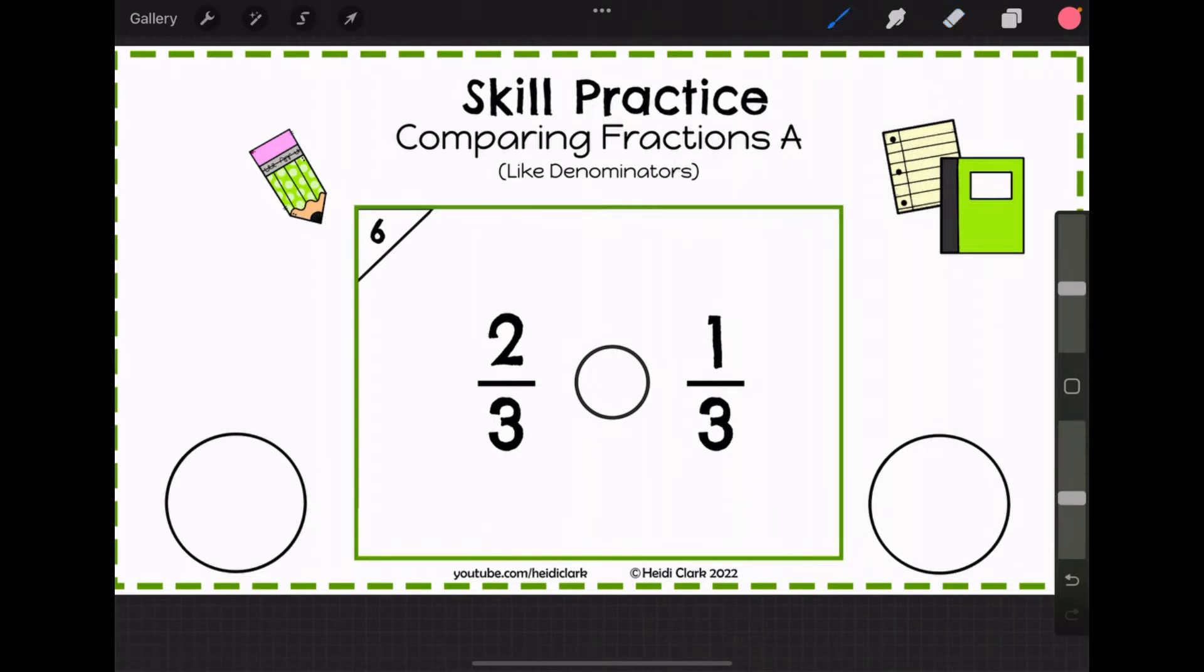The denominator is the bottom number, and it refers to how many pieces the whole is split into. So picture that pizza being split into three. That's how many people you have to split it amongst.